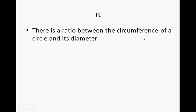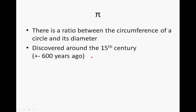Pi. There is a ratio between the circumference of a circle and its diameter. This was discovered around the 15th century. And remember when it's the 15th century, it is the 1400s. So it's 1452, 1405, 1492, etc. So the 1400s is the 15th century. That is round about 600 years ago.